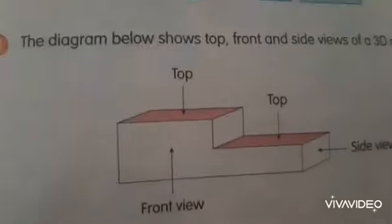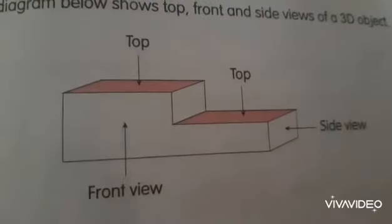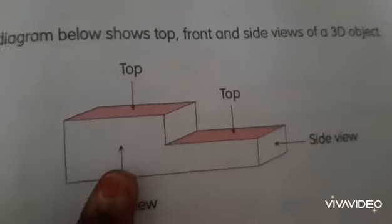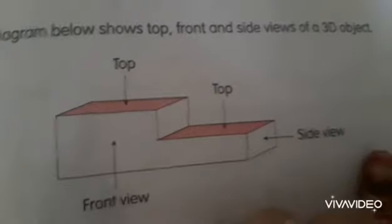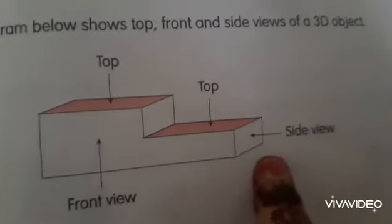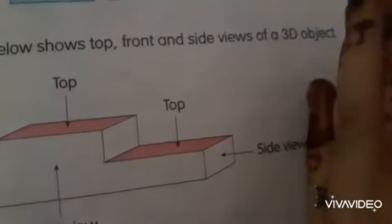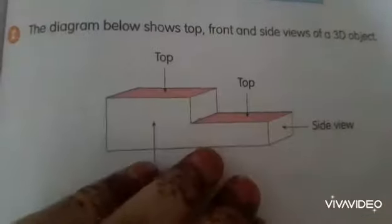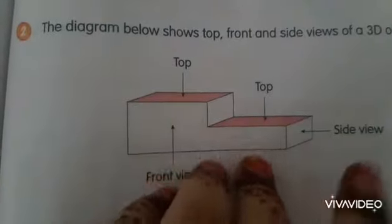Here is a 3D object given. This is the top view, this is the front view, and this is the side view. If you look at it from here, this is called the side view. If you look at it from here, this is called the front view. And if you look at it from above, then it is called the top view.